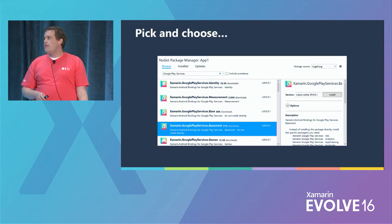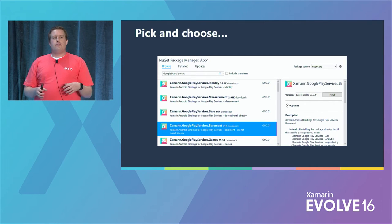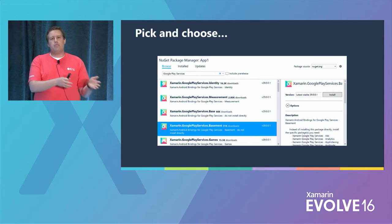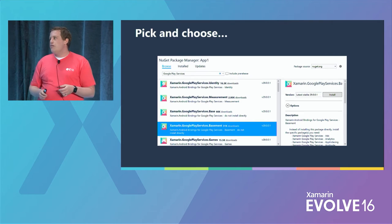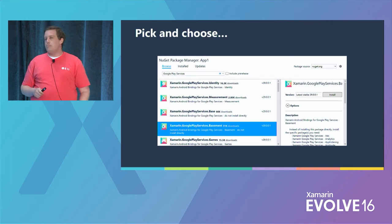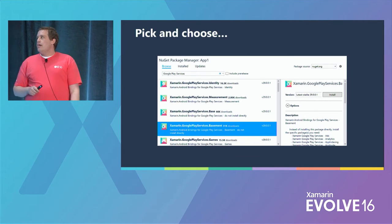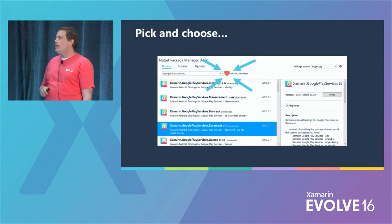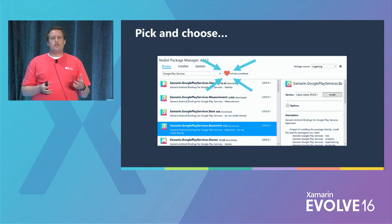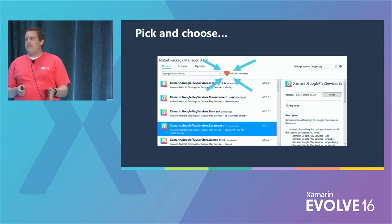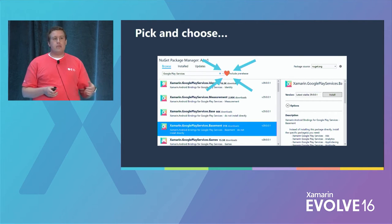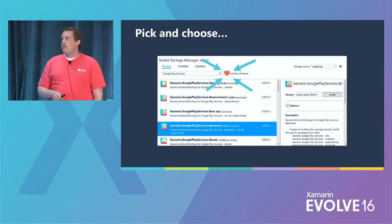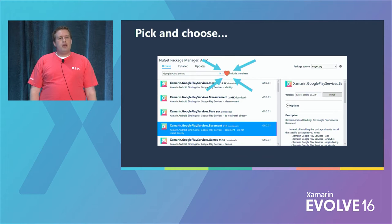If you're getting them from NuGet, it looks like our NuGet package manager. A while back, Google broke off all the different parts of Play Services into separate libraries because the main single library was getting really big. We've mirrored that intention with our NuGet packaging so you can pull in exactly what you want. If you like to live on the wild side, check the include pre-releases box. We try to get updates to Google Play Services very quickly after Google does — they usually live initially in pre-release while our QA team ensures quality.